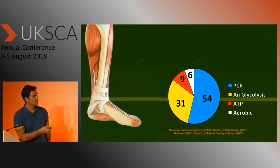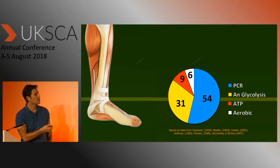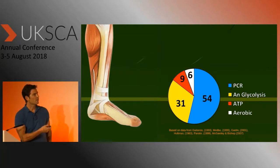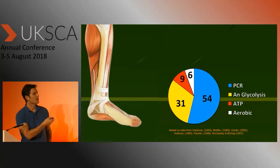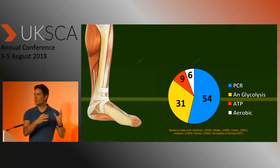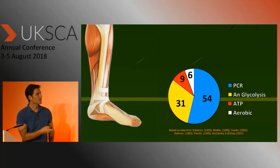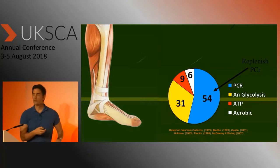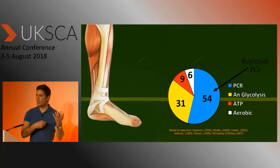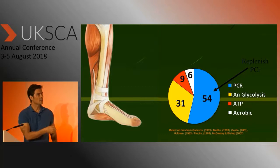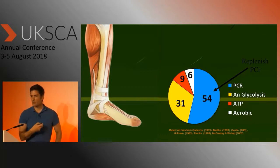There's been some good research on this. If you're doing a six-second sprint, the majority of the energy for that sprint is going to come from the breakdown of phosphocreatine, with a fairly large contribution from anaerobic glycolysis and a small contribution from stored ATP and aerobic metabolism. This suggests that to be able to do another sprint, you need to replenish those phosphocreatine stores as quickly as possible.